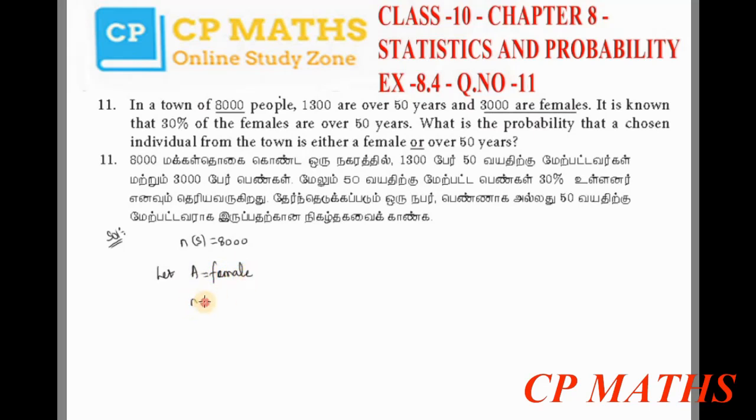Let A equal female. 3,000 are females, so n(A) equals 3,000. So then P(A) equals n(A) by n(S), so n(A) by n(S) is 3,000 divided by 8,000. Canceling zeros, we get 3 by 8.